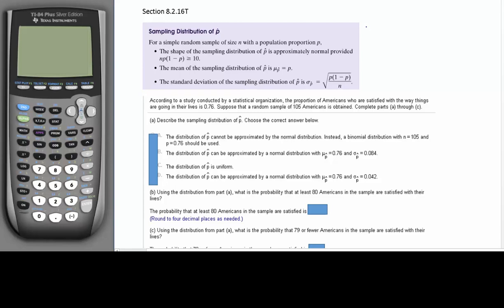I want to go through a quick example about the sampling distribution of p-hat. According to a study conducted by a statistical organization, the proportion of Americans who are satisfied with the way things are going in their lives is 0.76. Suppose that a random sample of 105 Americans is obtained.